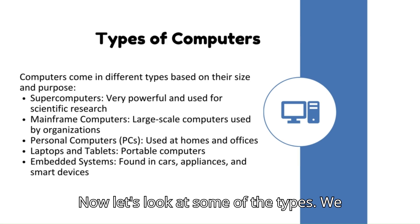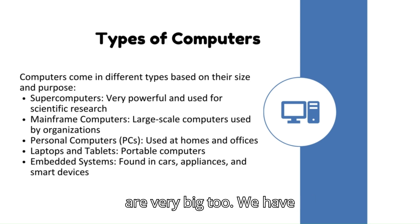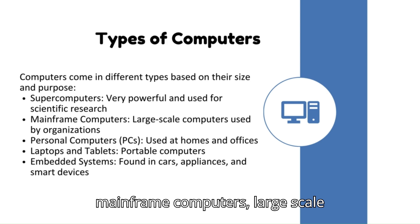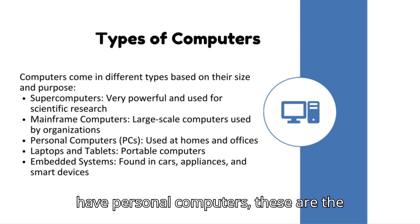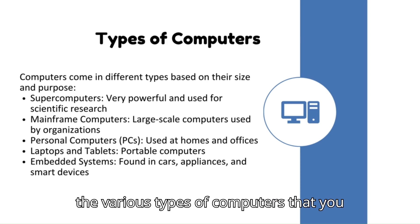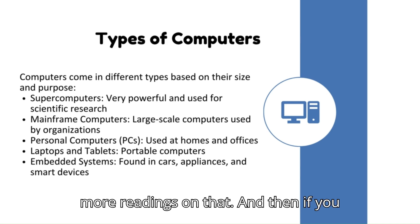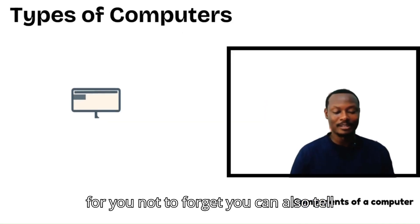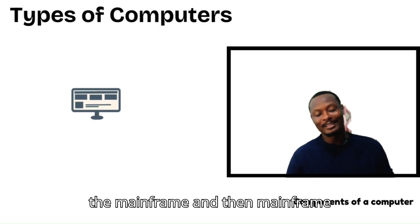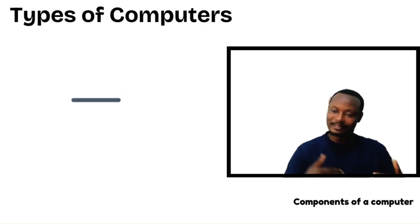Some types of computers: supercomputers are very powerful, used for scientific research, and are very large. Mainframe computers are large-scale computers used by organizations. Personal computers are the ones we commonly use. On the screen are the various types you can take notes from. From top to bottom, supercomputers are bigger than mainframes, and mainframes are bigger than personal computers, in that order.